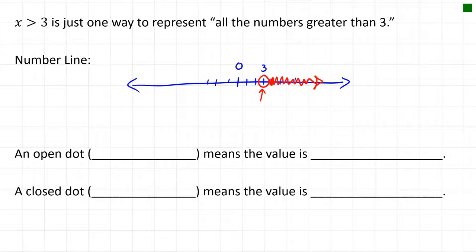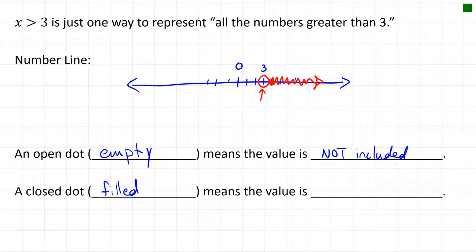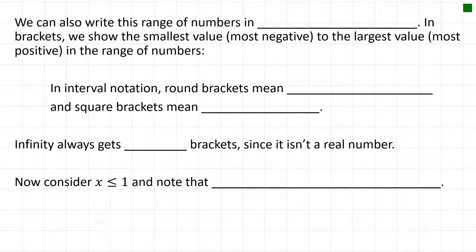The open circle demonstrates that 3 is not included in this set of numbers. The next number infinitesimally to the right, like 3.00001, is included, but 3 itself is not. An open dot — also called an empty dot — means the value is not included in the set. A closed dot, or filled dot, means the value is included in the set being represented on the number line.